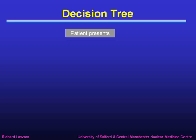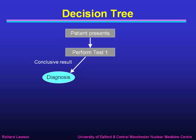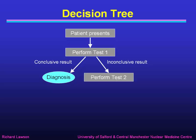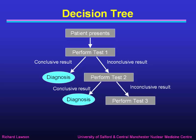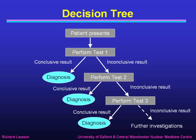We can have a decision tree where the patient presents and we perform the first test. If we get a conclusive result, either positive or negative, we have a diagnosis. But if we have an inconclusive result, we have to go on and perform a second test. Hopefully that will give us a conclusive diagnosis, but it might also give an inconclusive result where we have to perform a third test. We may get a conclusive result or an inconclusive result, which means we still need further investigations. That's what we mean by a decision tree.